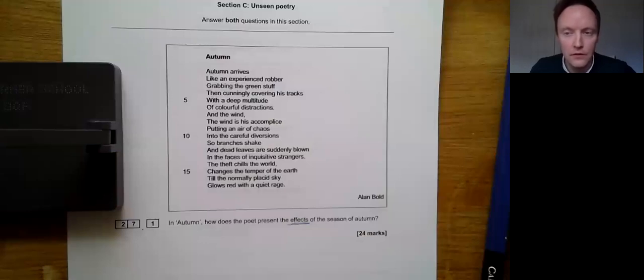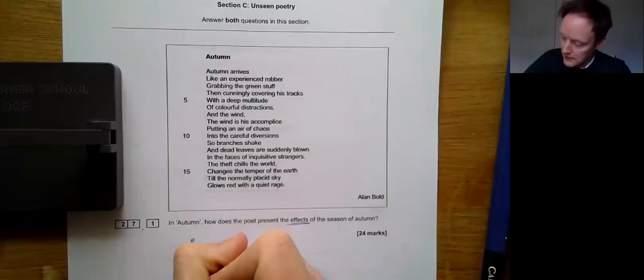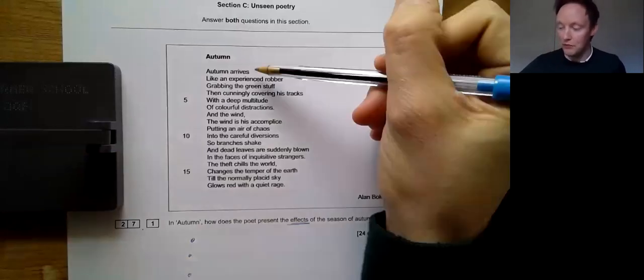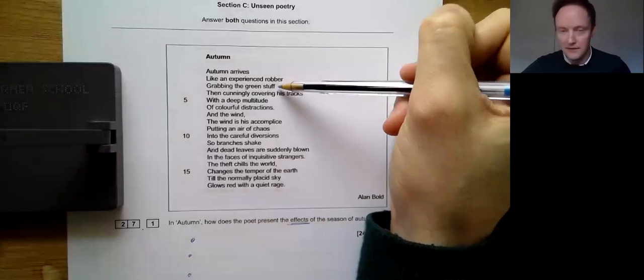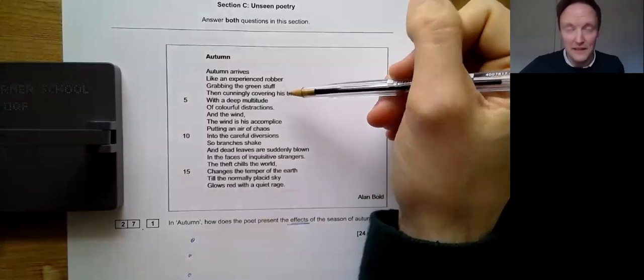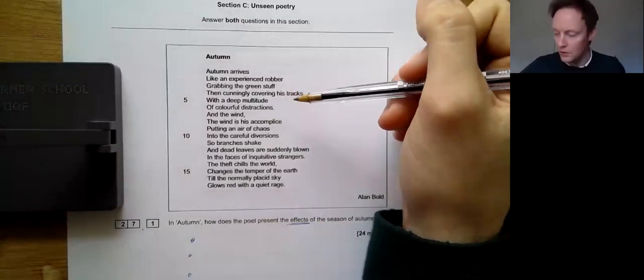Right. First thing that you should do, I'm going to say the same things as I said in the other video on Unseen Poetry, is write down what you think the effects of the season of autumn are. So what you should do as you read through the poem again, a second time, is think to yourself, effects, effects, effects. What does autumn do? What does it leave people with? Autumn arrives like an experienced robber grabbing the green stuff. So it's a thief. And what do thieves do? They steal things. And when people steal things, what's the effect of it, other people are left heartbroken.